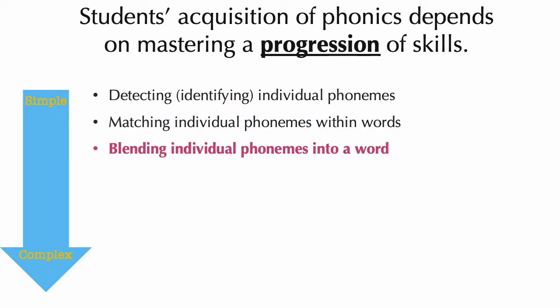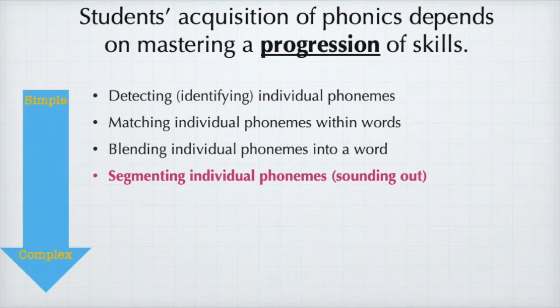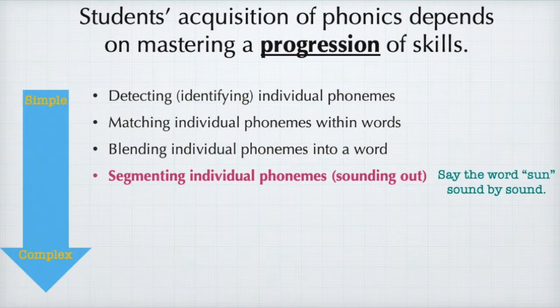Next is blending phonemes. We'll talk more about why this is a very important skill, but for now we'll define it as being able to see or hear individual phonemes and identify the word that they make together. For example, using the word sun, you could ask the student — either showing the letters, making the sounds, or both — what word did these sounds make? Along with blending, another really important skill is segmenting phonemes. This is what students are doing when they sound out a word. Using the word sun again, you would simply show the word and have the student say it sound by sound.